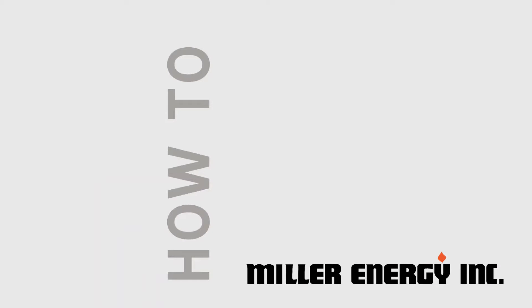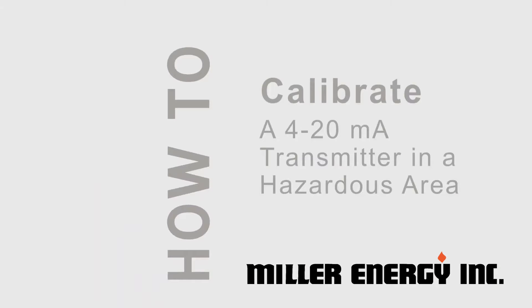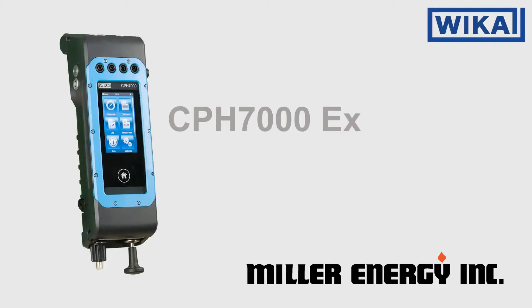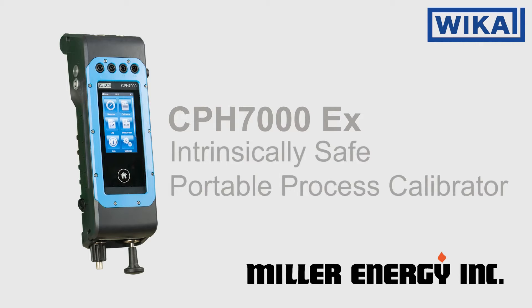In this video we'll show how to calibrate a 4 to 20mA pressure transmitter in a hazardous environment. We'll use the WIKA CPH7000 Intrinsically Safe Portable Process Calibrator to program the calibration sequence.